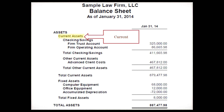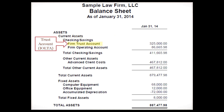Looking at the balance sheet itself, there are two categories of assets. First are current assets — those are assets that will normally be converted into cash within one year in the normal course of business. The other category is fixed assets — those are long-term tangible property the law firm owns and uses in its operation, not expected to be converted into cash for at least one year.